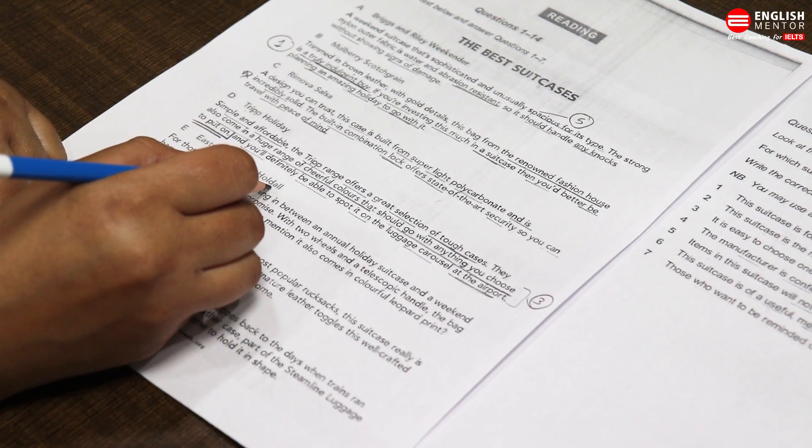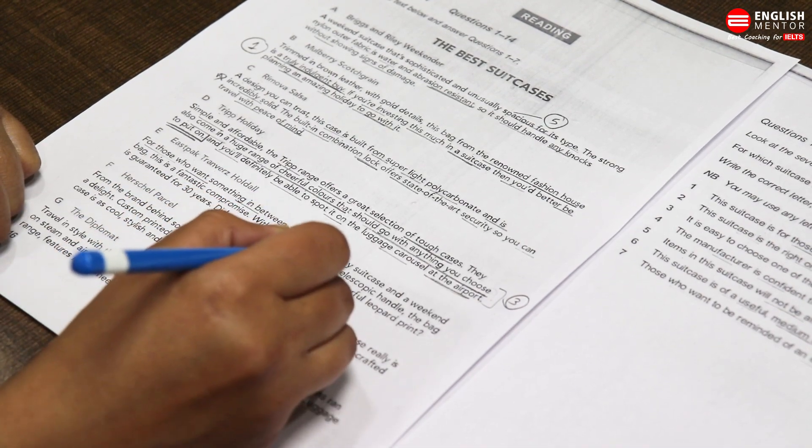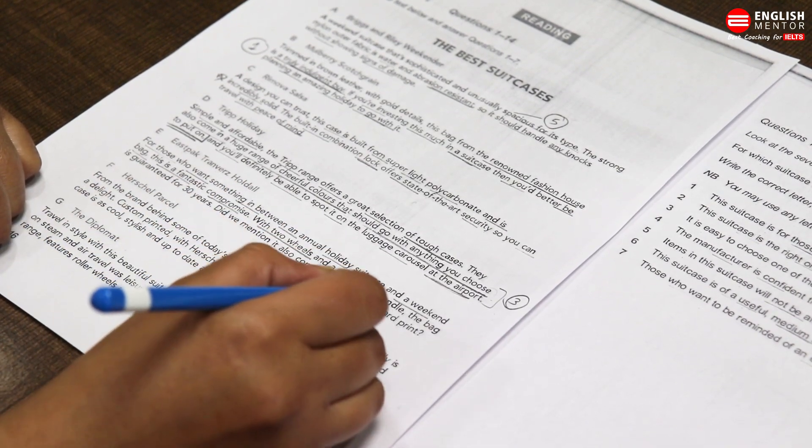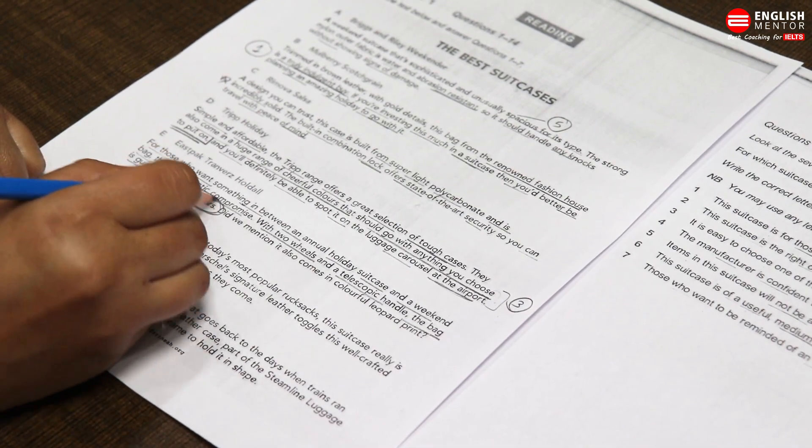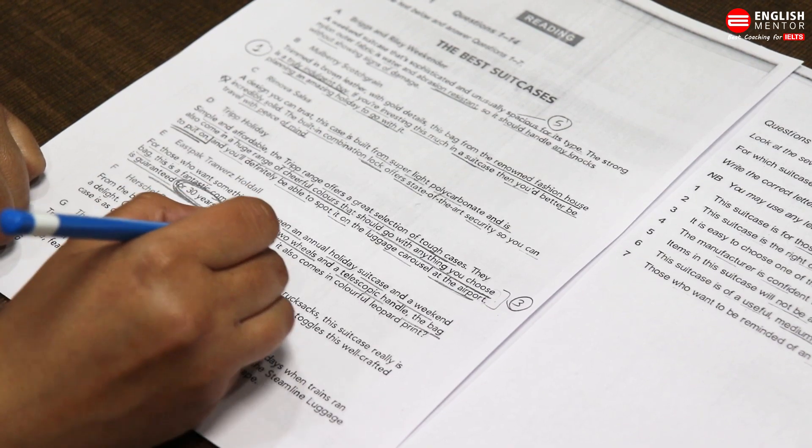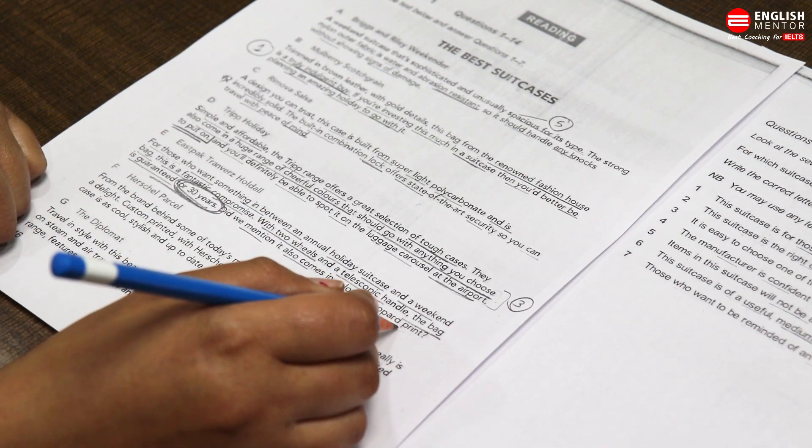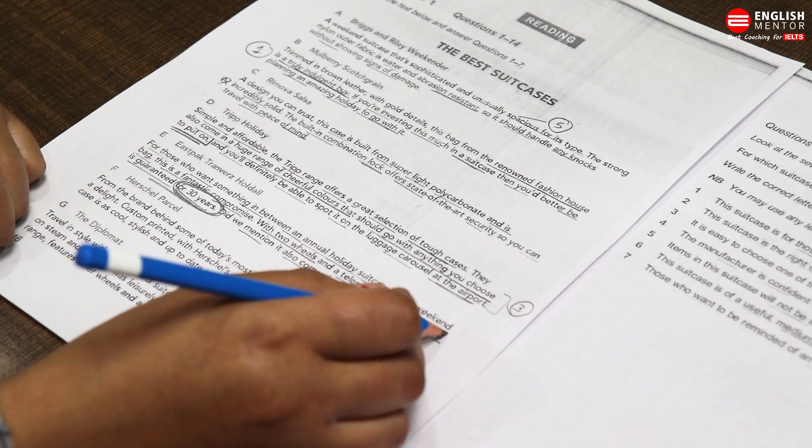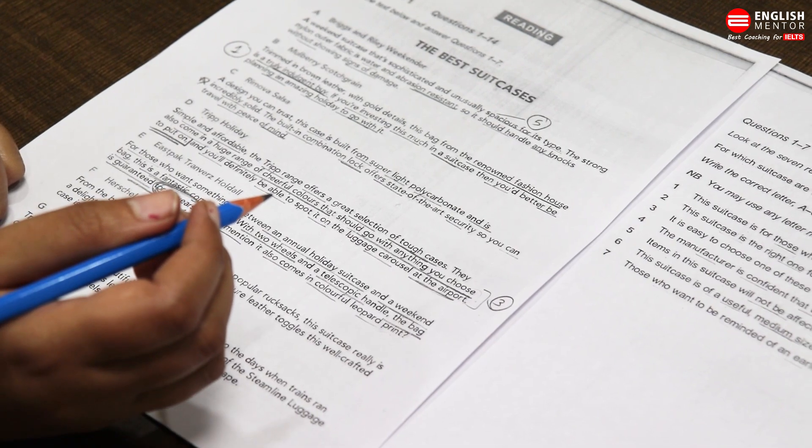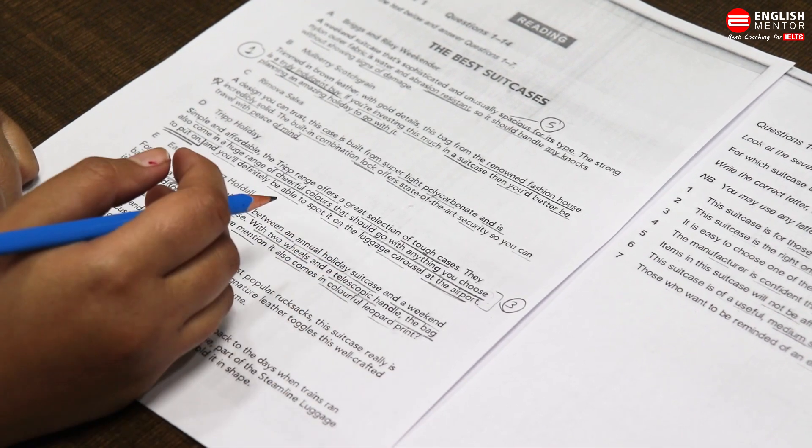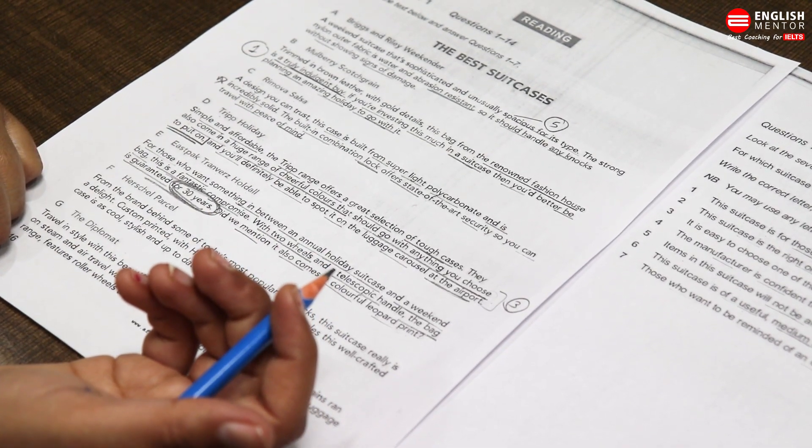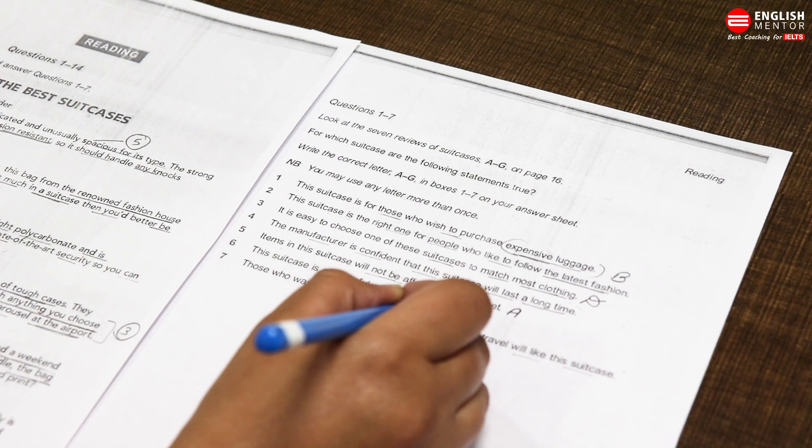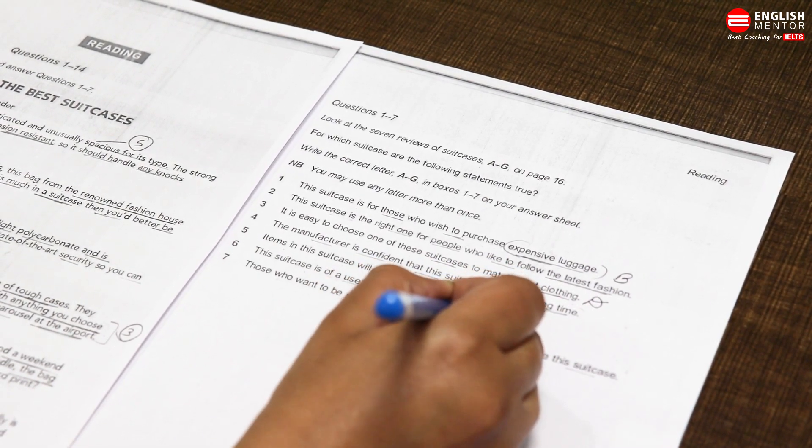Eastpak Traverse Holiday: For those who want something in between an annual holiday suitcase and weekend bag, this is a fantastic compromise. With two wheels, a telescopic handle, the bag is guaranteed for 30 years. Bag ki guarantee kitni hai? 30 years hai. Did we mention it also comes in colorful leopard print? 30 years ki guarantee hai. Annual holiday ke liye yeh use kiya ja sakta hai, yeh weekend bag bhi hai jo fantastic compromise karte hai. So weekend bag, weekend kya hota hai? Short duration hoti hai weekend ki. So yeh kar raha hai ki useful hai aur medium size hai. So question number six: this suitcase is useful and medium size. Weekend bag hai, fantastic compromise hai. So question six ke liye I will mark option E.